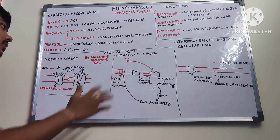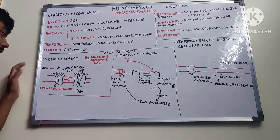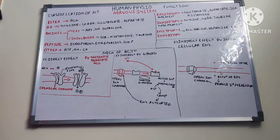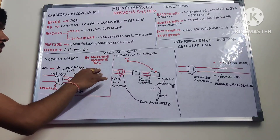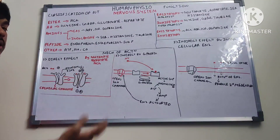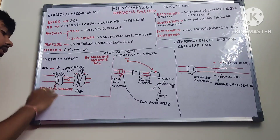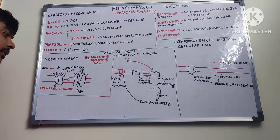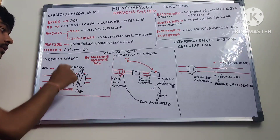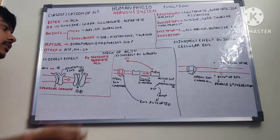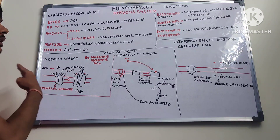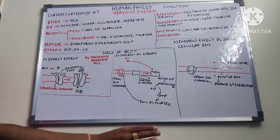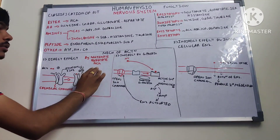There are three types of mechanisms for neurotransmitter action. The first is direct via chemical-gated ion channels. Acetylcholine binds to its receptor on the ion channel — positive charge outside, negative inside — and the binding opens the channel, allowing ions to enter and cause depolarization. Examples of neurotransmitters acting by direct effect: glutamate, aspartate, and acetylcholine.